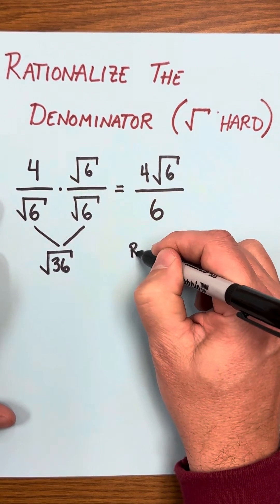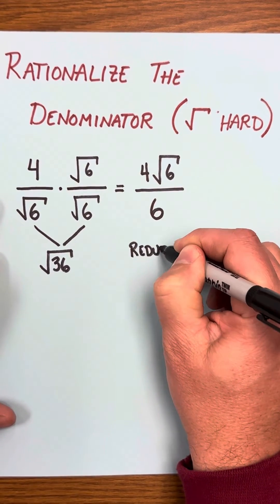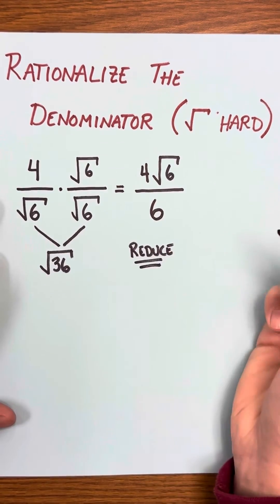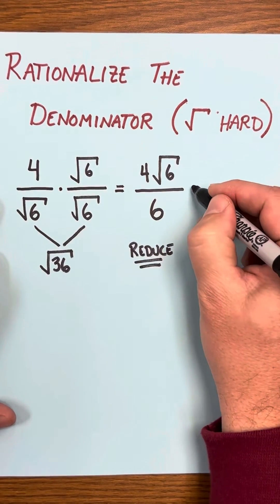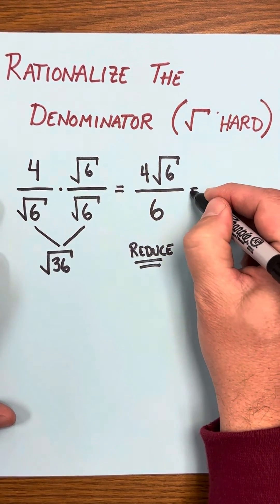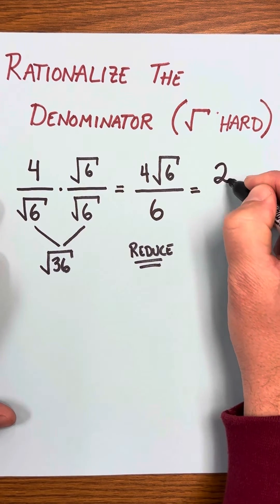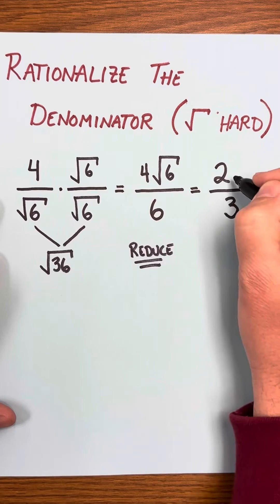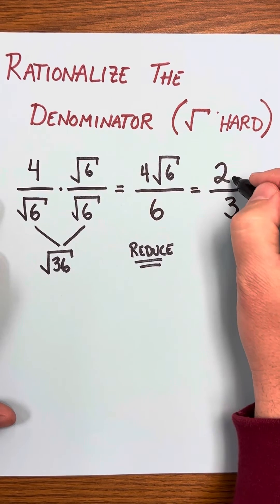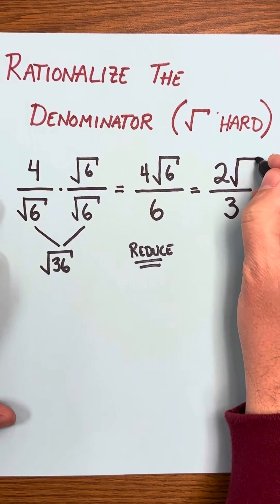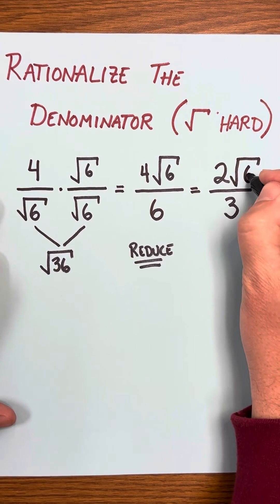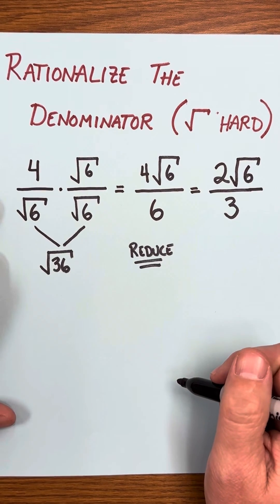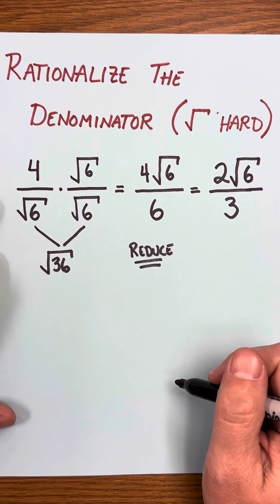Now, you must always check to see if you can reduce the fraction. 4 and 6 can both divide by 2, so we'll reduce that to 2 over 3. The square root of 6, because that 6 is under the square root, it does not get to be reduced by 2 like the other numbers, so we get 2 square root of 6 over 3.